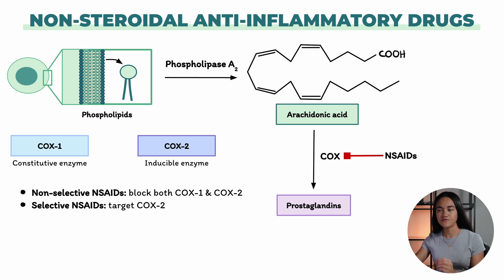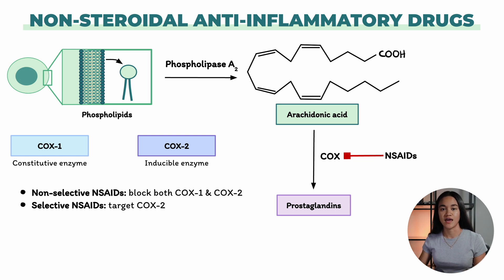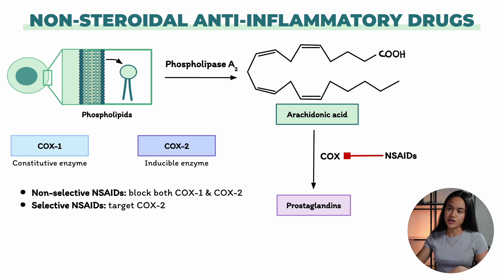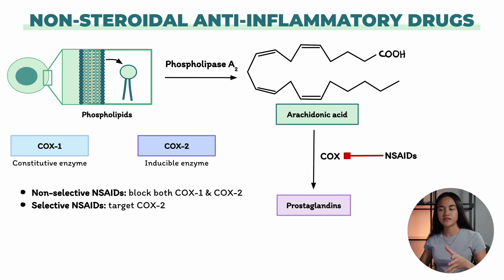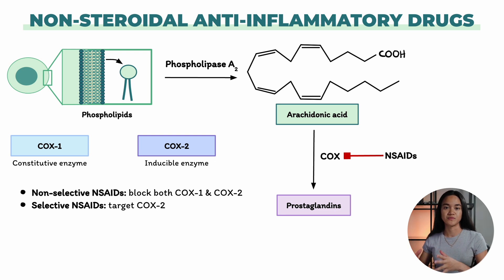The other class of NSAIDs are the selective drugs. These drugs specifically target COX-2, focusing on reducing inflammation and pain. The key effect of both types of NSAIDs is the same — reducing prostaglandin production by blocking cyclooxygenase. Since prostaglandins are critical in inflammation and pain, these drugs are commonly used to manage those symptoms.